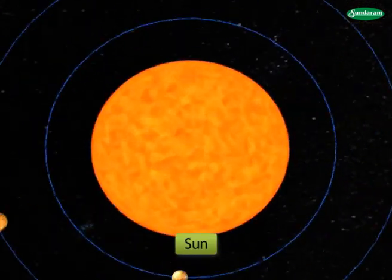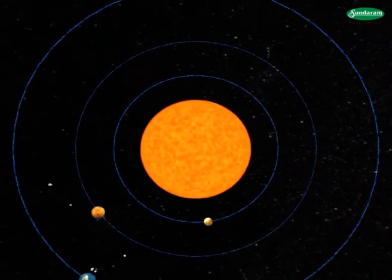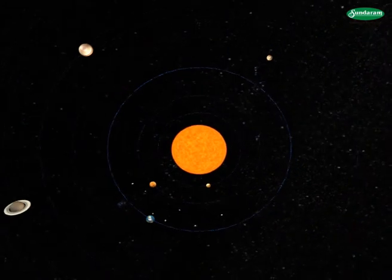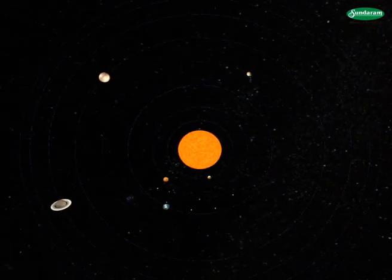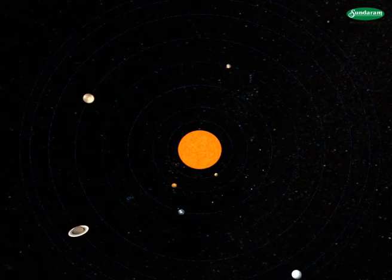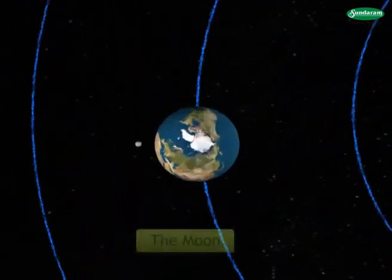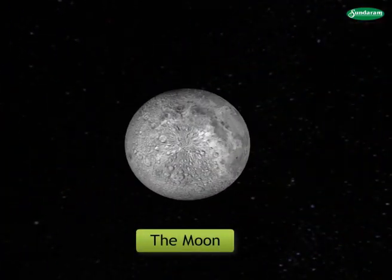The Sun itself is a star, and there are eight planets including the Earth which revolve around the Sun in different orbits. Let us study about the Moon.